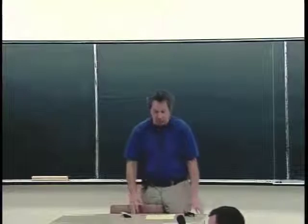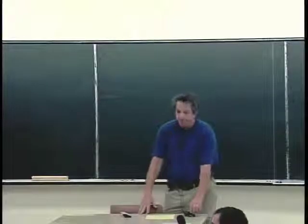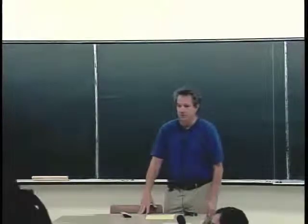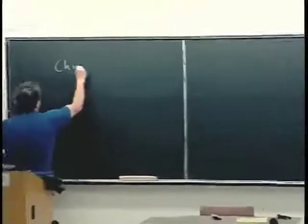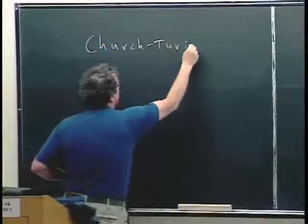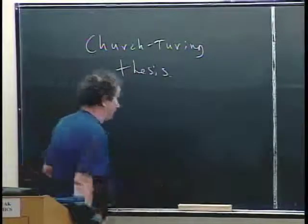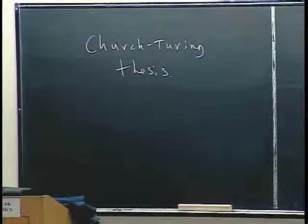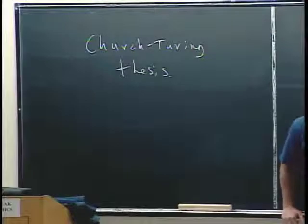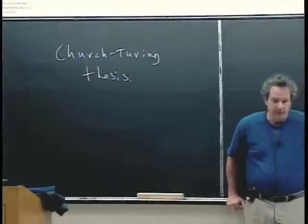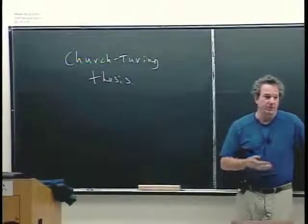Today I'm going to definitely present one, and then start building up towards the second high point, which we'll probably do on Thursday. So — the Church-Turing hypothesis, or thesis, or theory. Church was a logician in the 1930s, Turing in the 1940s roughly, and they were trying to formalize what it meant to be able to compute something — what an algorithm means.